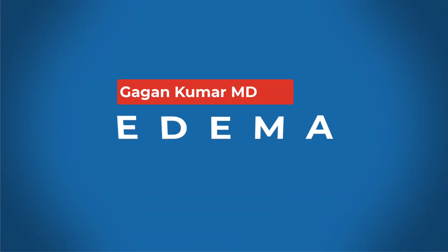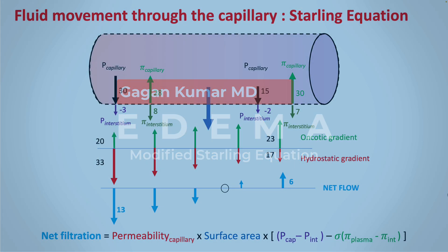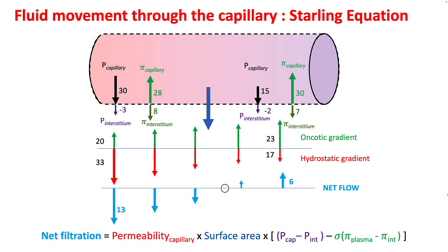Hello everyone, today we will be talking about the Revised Starling Equation. In the previous lecture, we understood the Starling Equation, where we figured out that the net flow out of the capillaries depends upon the differences between the hydrostatic pressure gradient and the oncotic pressure gradient.